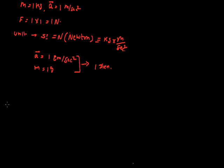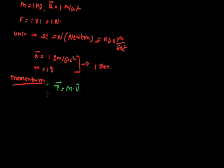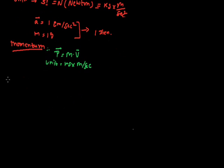Now we will discuss momentum, which we introduced in Newton's second law. Momentum p is equal to m times v — it is simply the product of mass and velocity, and it shows the combined effect of mass and velocity. The unit of momentum is kg times meter per second.